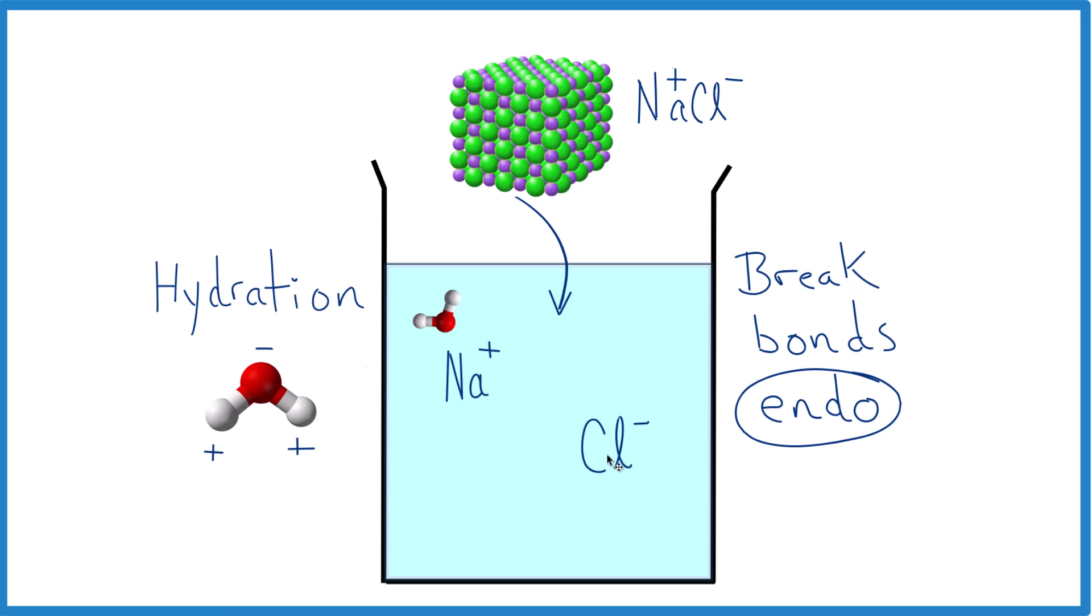For the chloride ion here, it would be the other way around. They'd line up around this chloride ion so the positive here on the hydrogens is near the negative chloride ion. And they would surround it. That's called hydration.